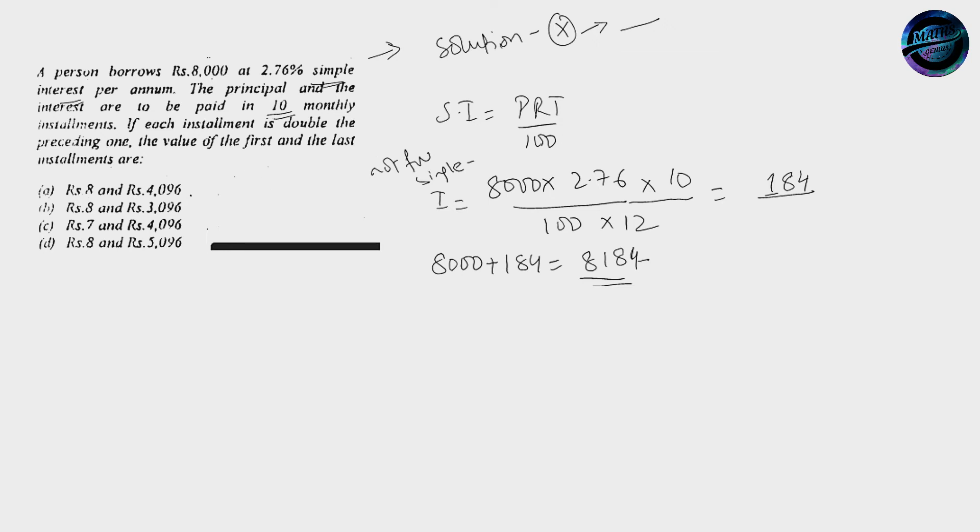Now the question starts that if each installment is double. We are unaware of the installment, but what we are aware of is that the total is 8184. They will be receiving an amount of 8184 at the end of 10 months. If each installment is double, installment 1 is I for example, the second installment is 2I, the third one is 4I. Since every one is a multiple, we can say that it is a geometric progression. Geometric progression and R is equal to 2.